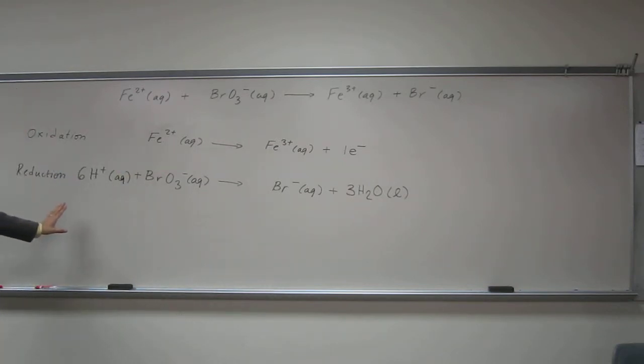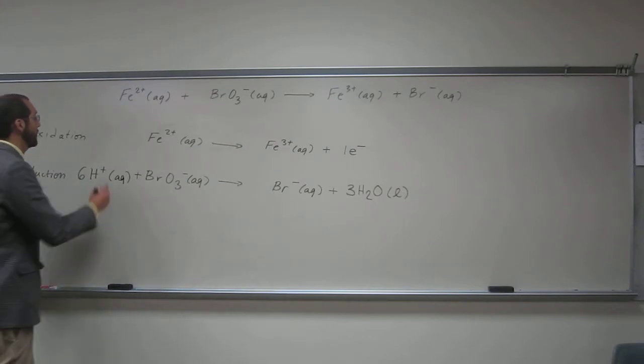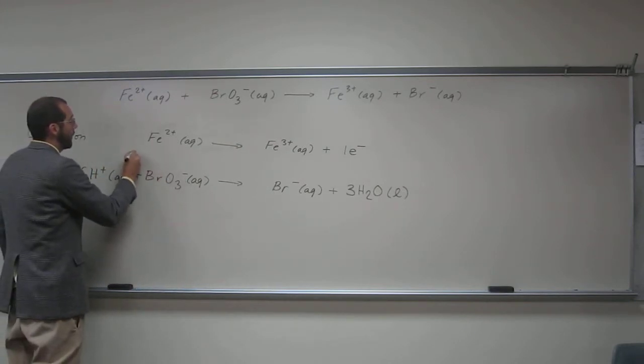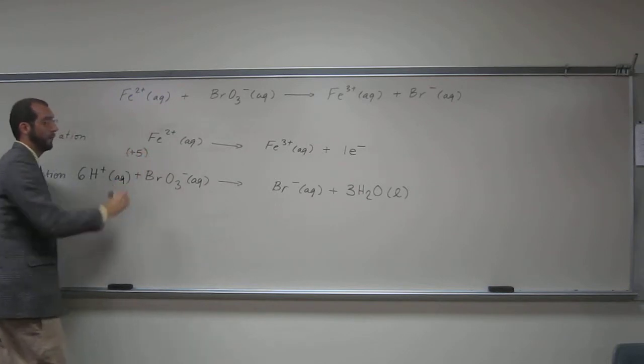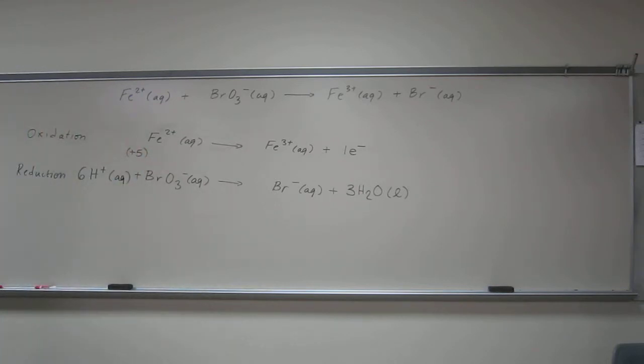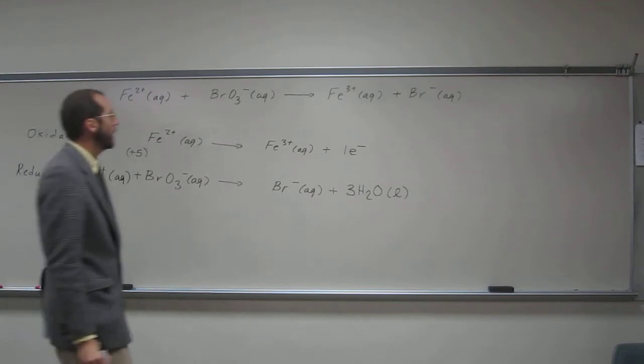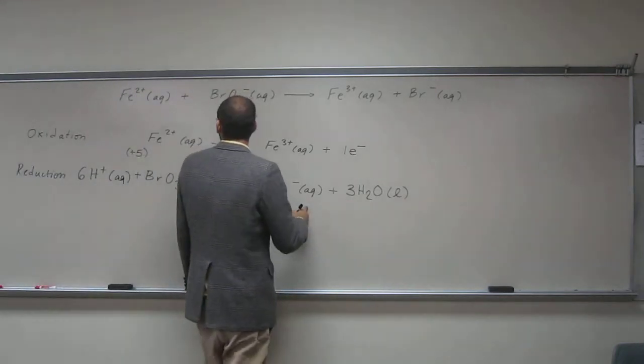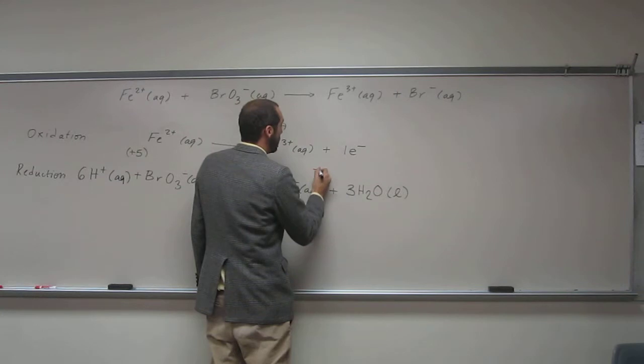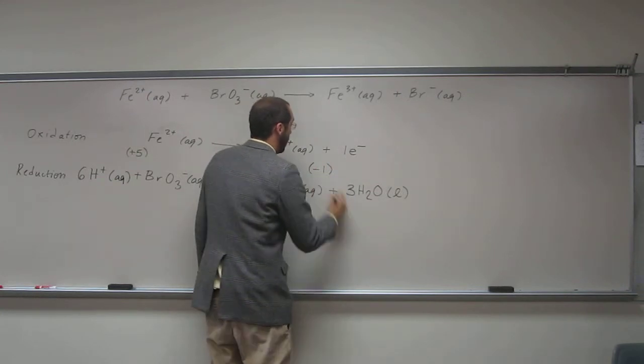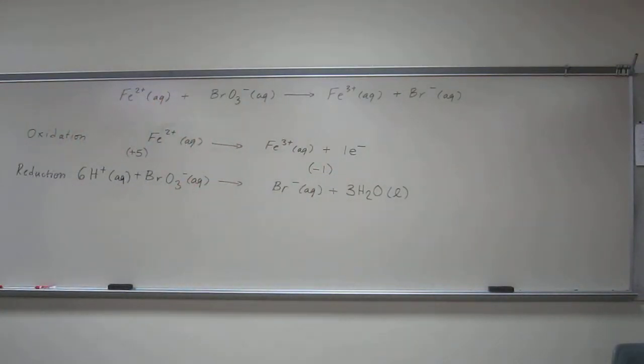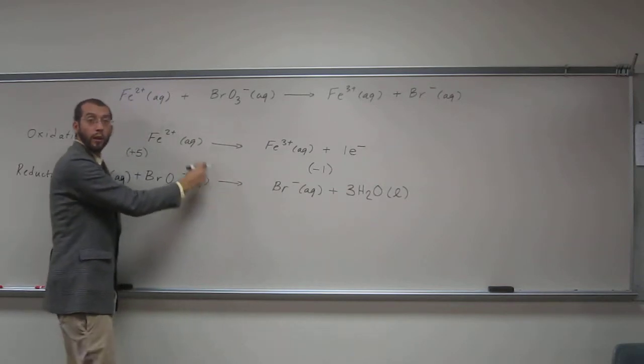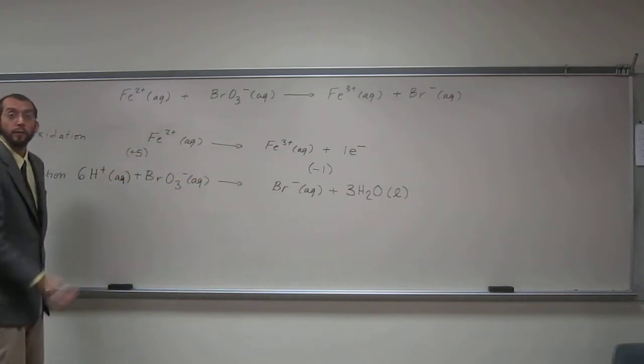So now we're going to come down here and balance this equation. So here we've got 6 plus, right, plus 1 minus, so we're going to have overall +5 on this side. So the thing we're going to have to do is put electrons on this side.